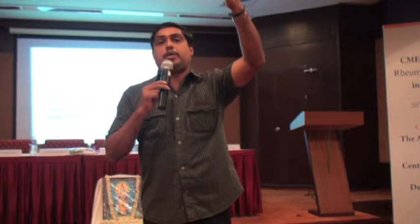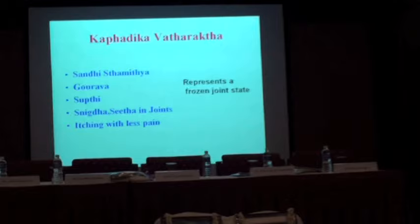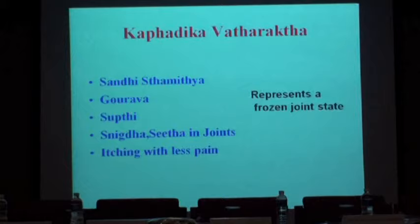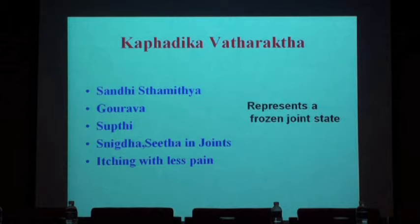That is why there is a Kashayam in Kerala called Ashtavargam. It is called Anilavagha, but I would like to call it Kaphadhigandha Anilavagha, because the drugs — Bala, Shalaparni, Eranda, Shunti, Rasna, Suradhruma, Sindhuvara, Lashuna — all are Vishna-Ushna drugs.